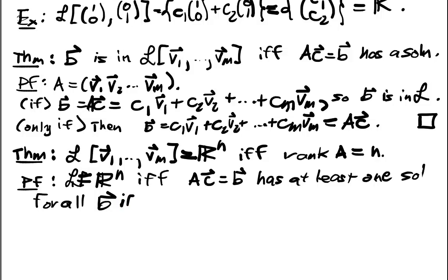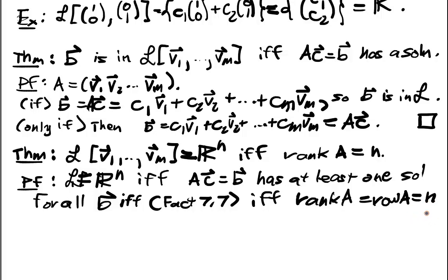And this is true by our fact 7.7, if and only if, the rank of A is equal to the rows of A, which is equal to N, which means we're done.